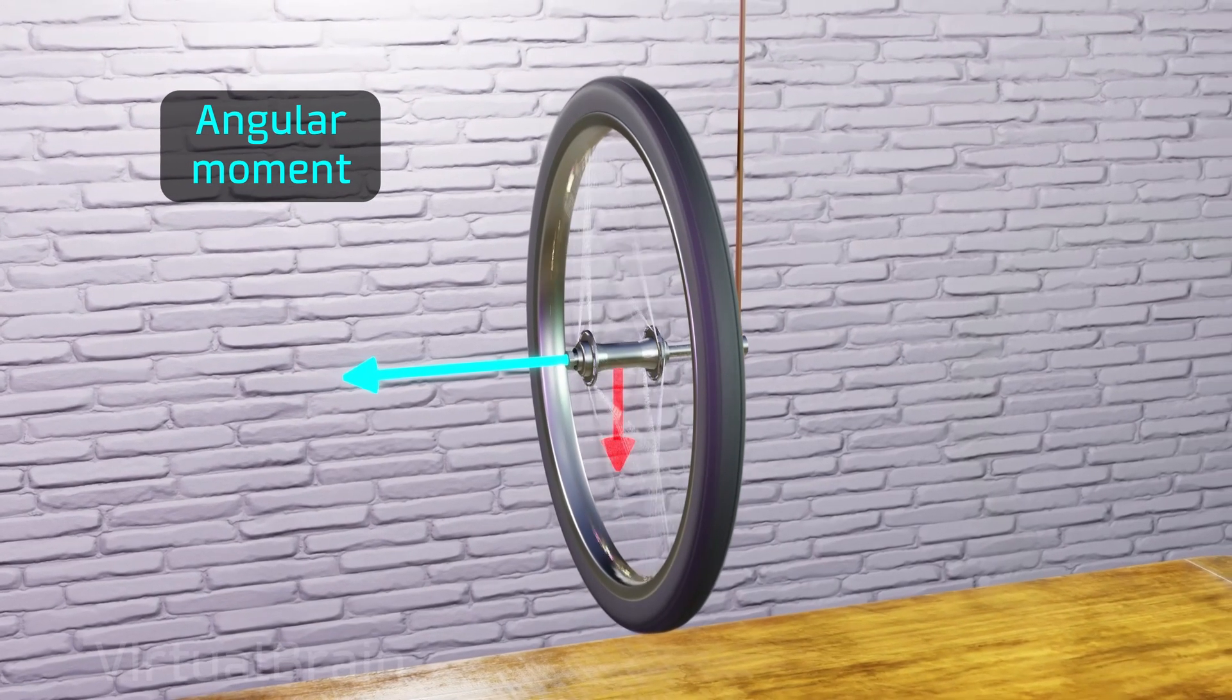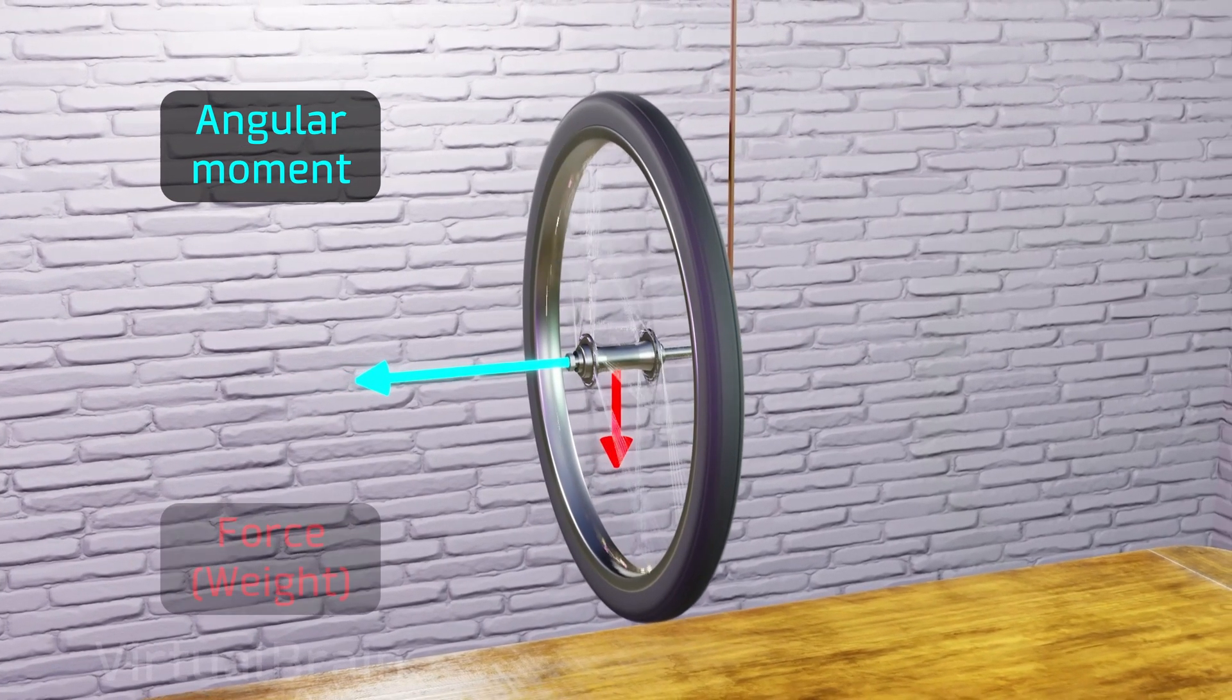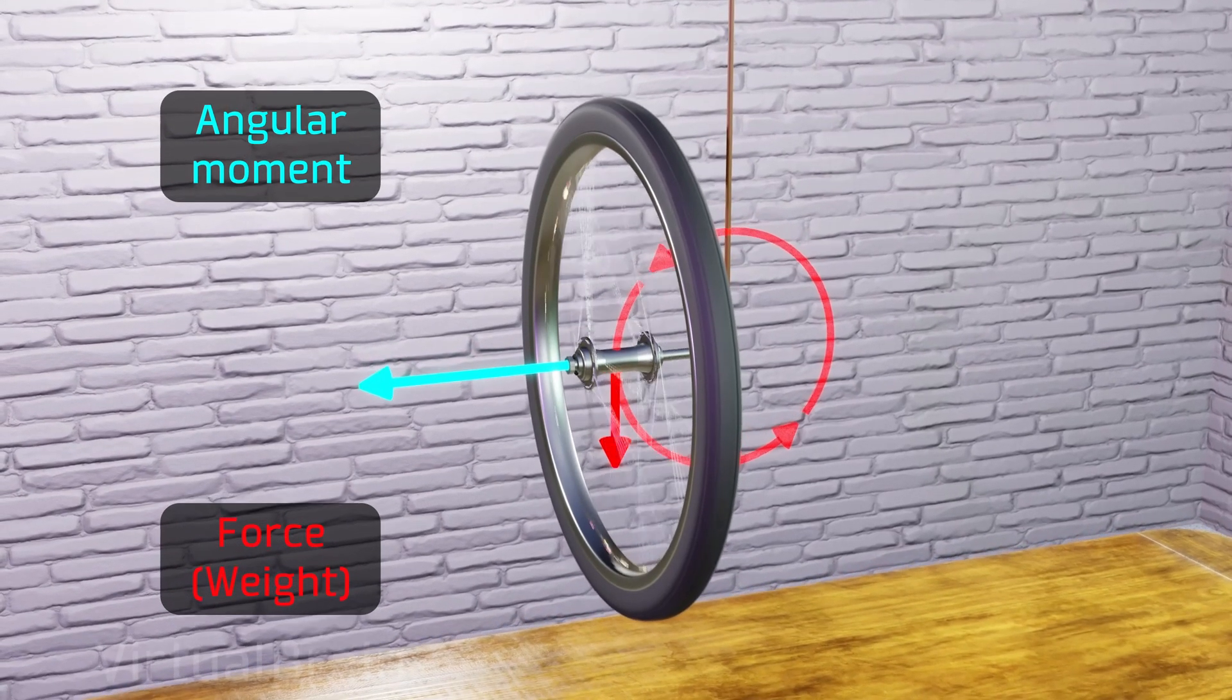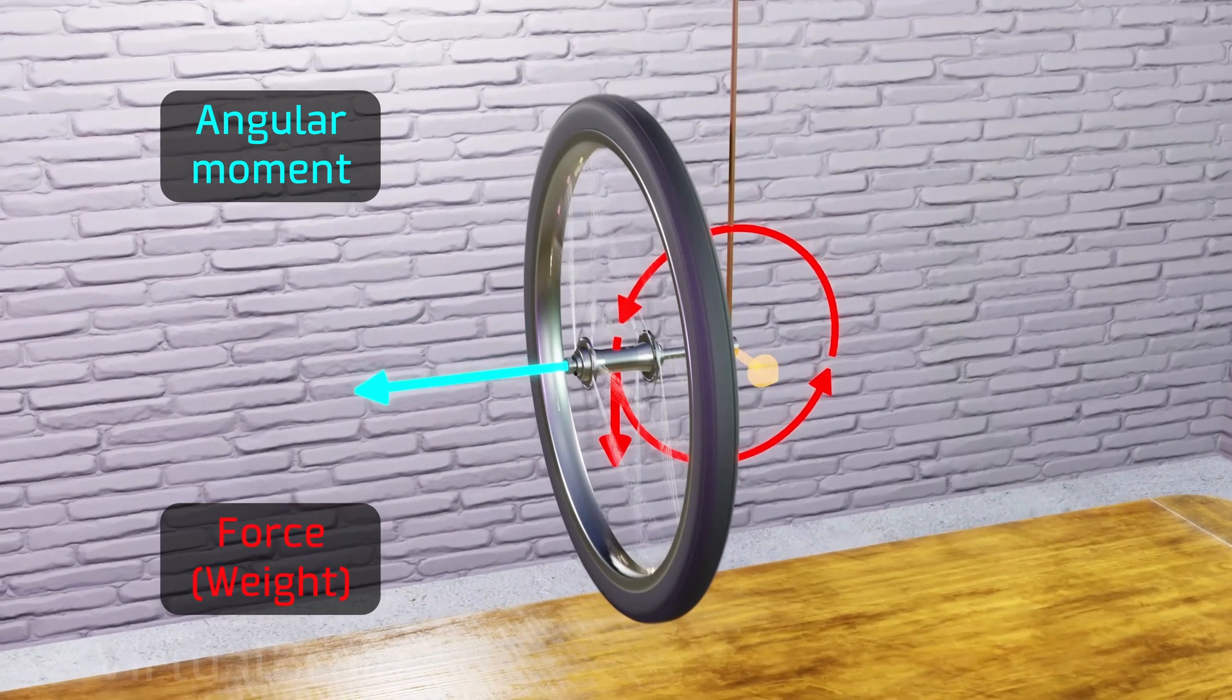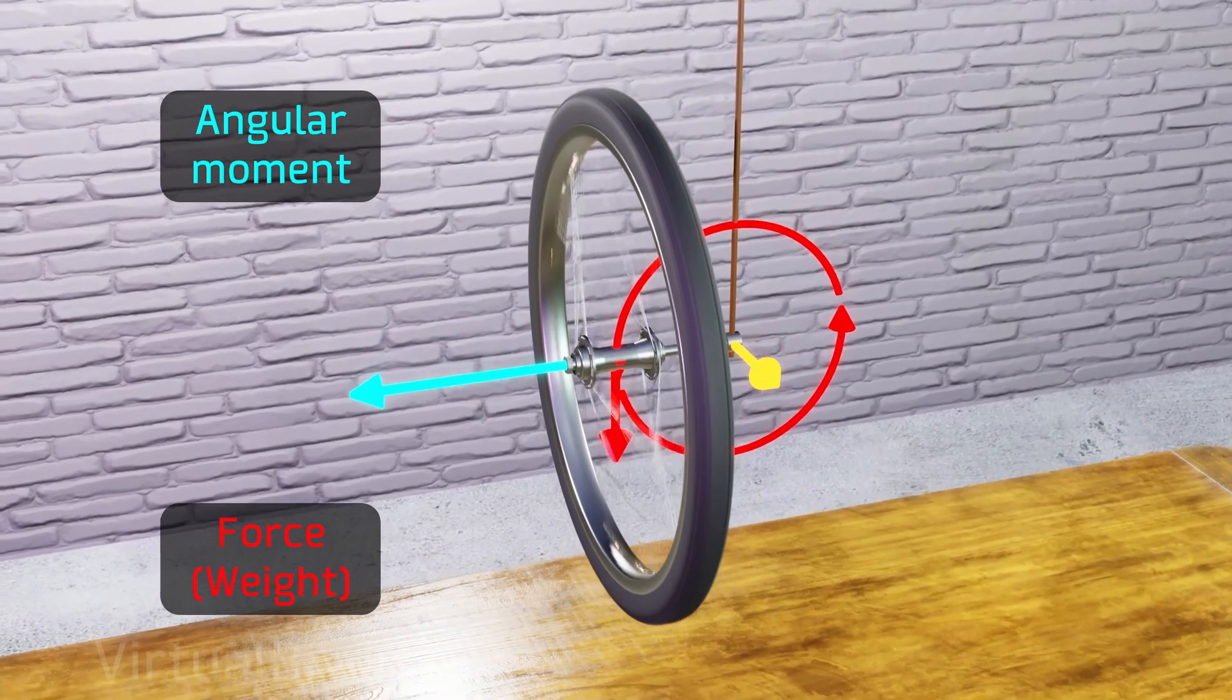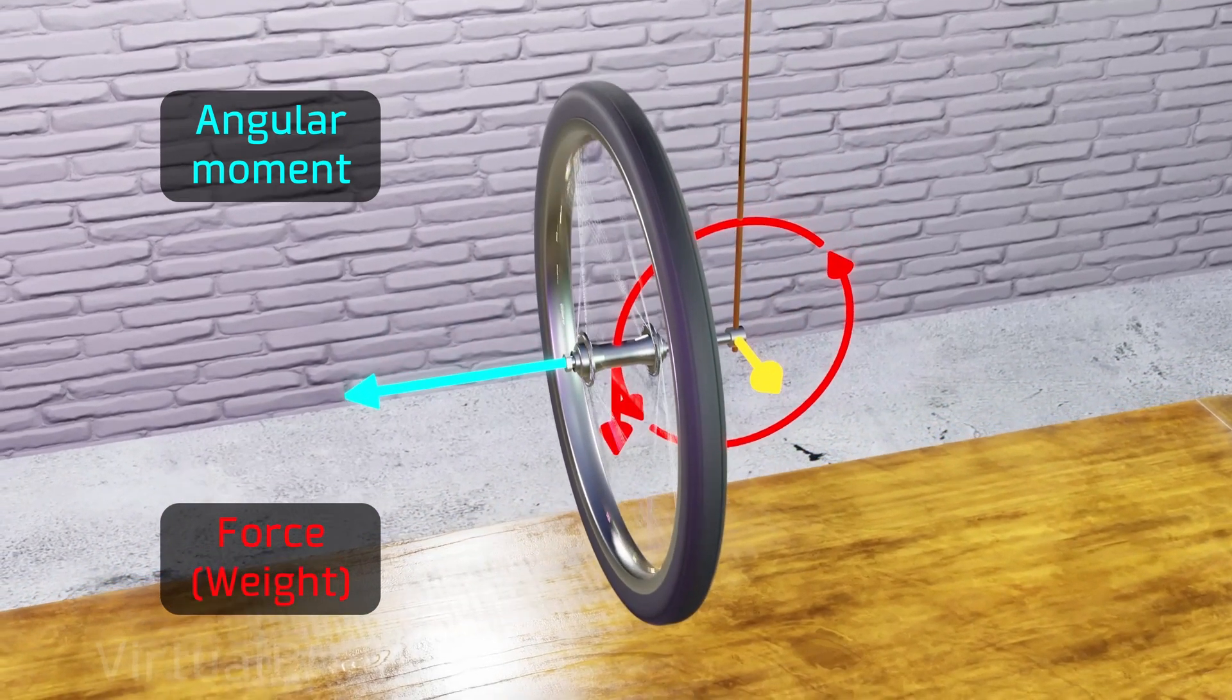Due to gravity, there is a force called weight, which is applied at the geometric center of the wheel. Since the axle of the wheel can rotate with respect to its supporting point, the weight will generate a perpendicular torque that would cause the wheel to fall to the ground.